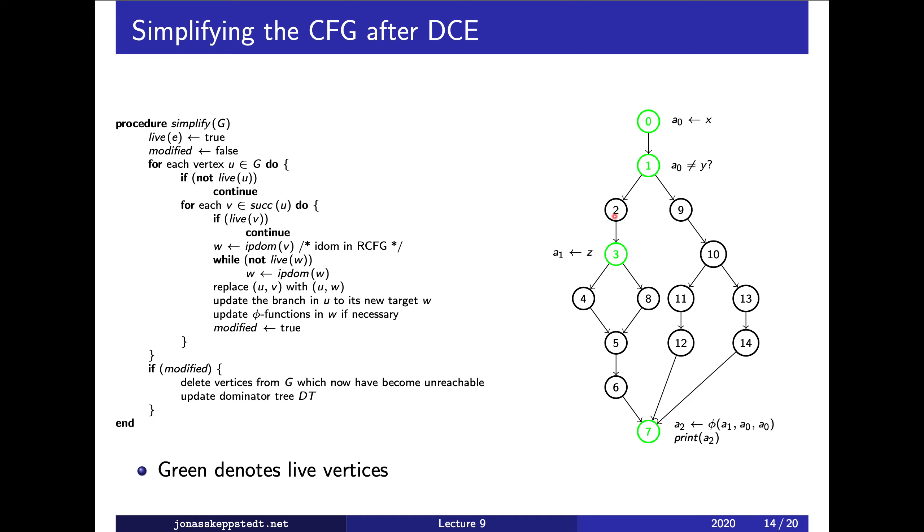From here, if we are not going to three, we should go to seven directly and skip all this. How can we find which vertices to skip? We can use the immediate dominator in the reverse control flow graph, written as immediate post-dominator.